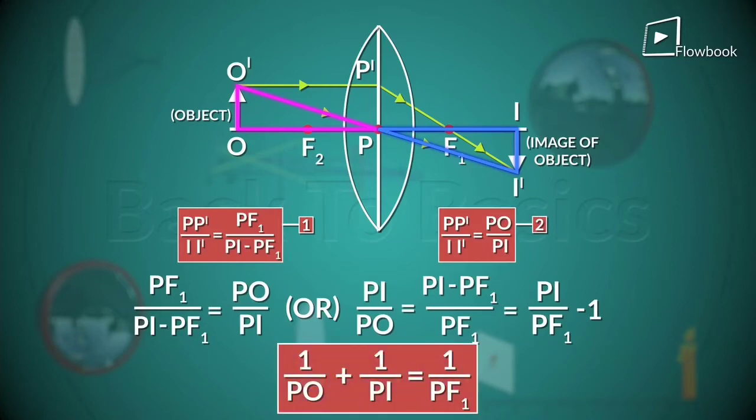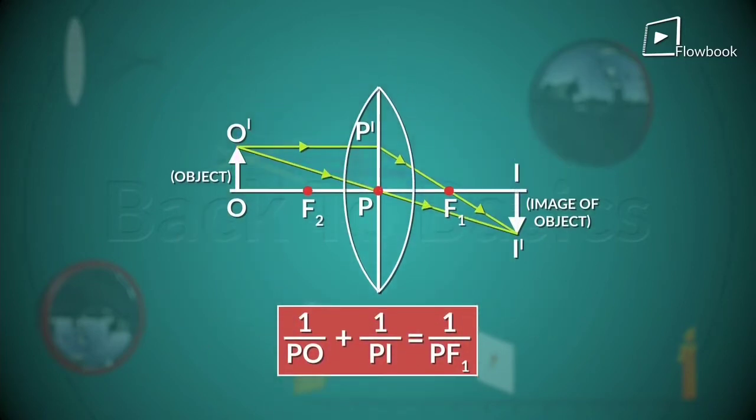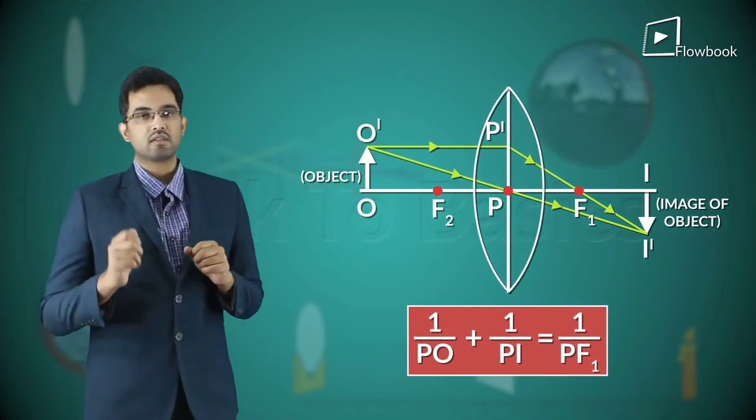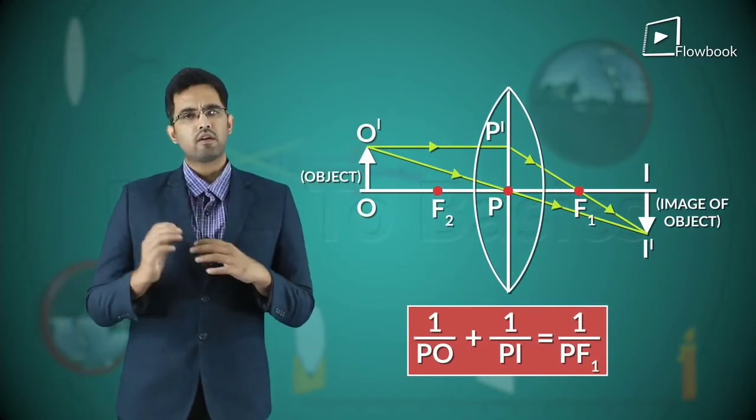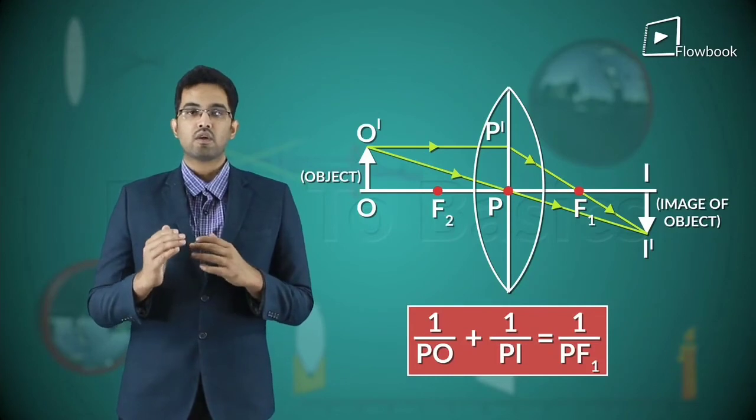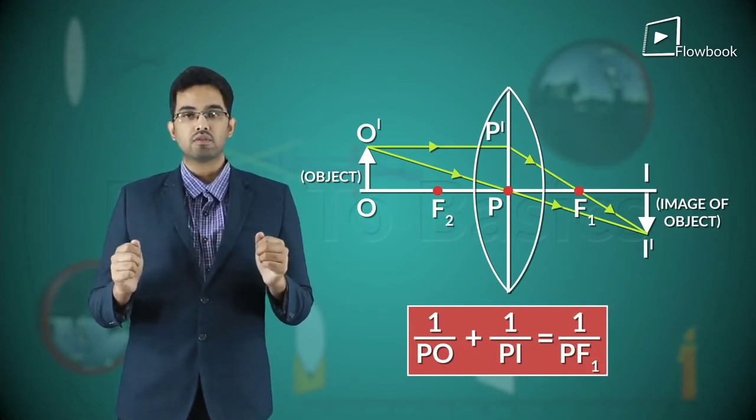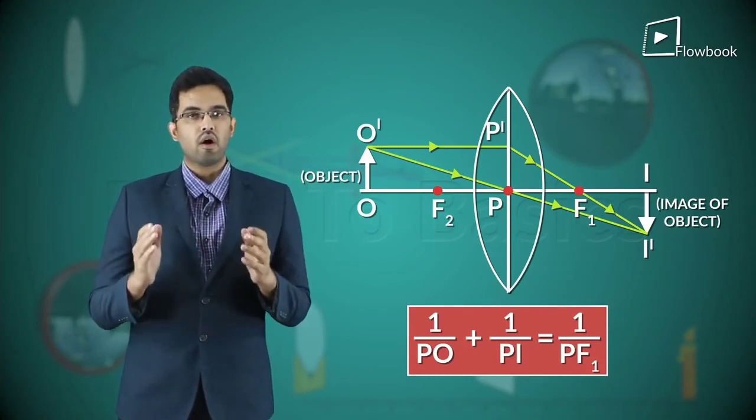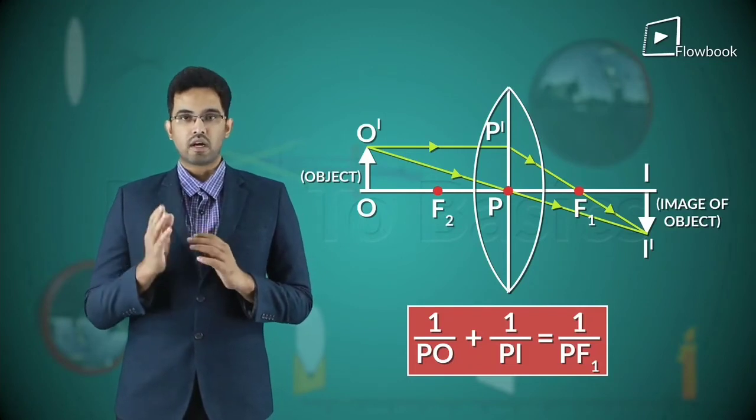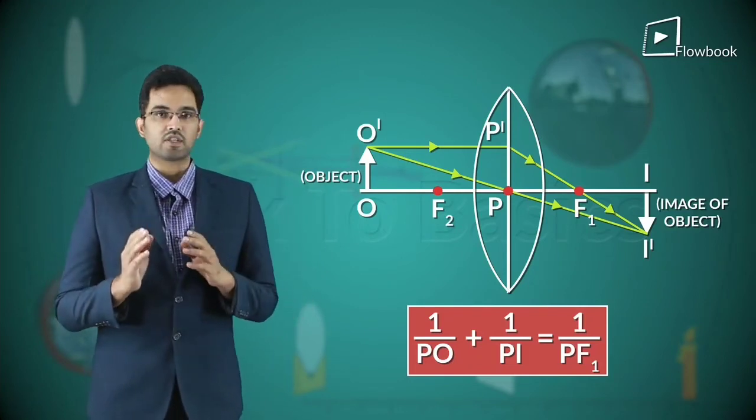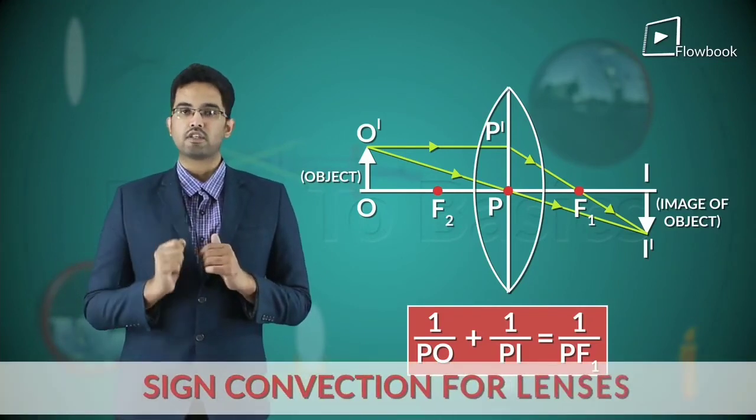Now, this equation is for this case when the lens is convex and the object is placed here. We can use this equation, but we can also generalize this equation through which we will be able to use it for all lenses and all object distances. To convert into a general equation, we need to use a sign convention for lenses.